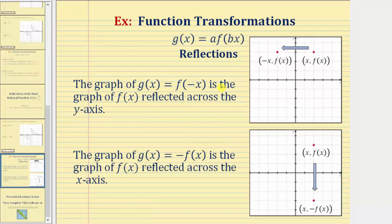The graph of g of x equals f of negative x is the graph of f of x reflected across the y-axis. We're changing the sign of the x values, or inputs, of f of x in order to determine the function values, or y values, of g of x. So for example, if this is one point on f of x, in order to find the corresponding point on g of x, we need to change the sign of the x-coordinate. Changing the sign of the x-coordinate reflects the point across the y-axis, giving us this point here. This is why, when we have g of x equals f of negative x, the graph of g of x is a reflection across the vertical, or y-axis.